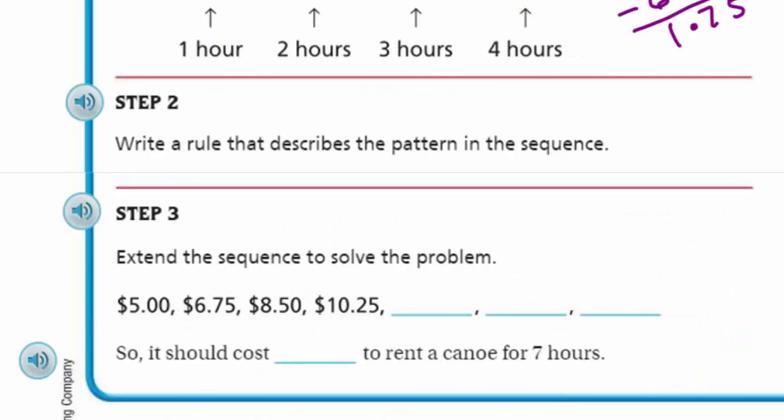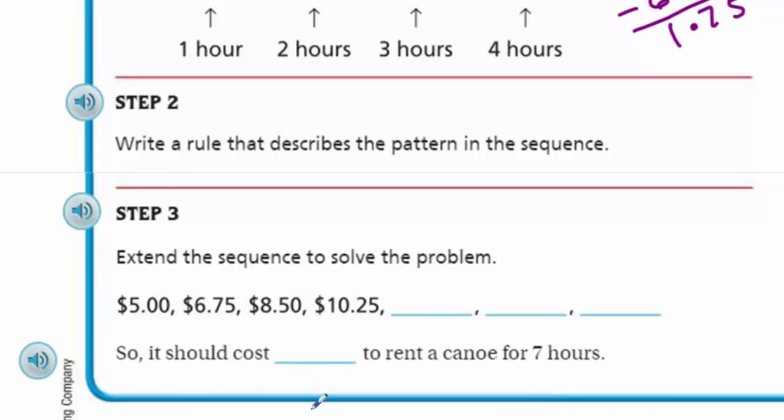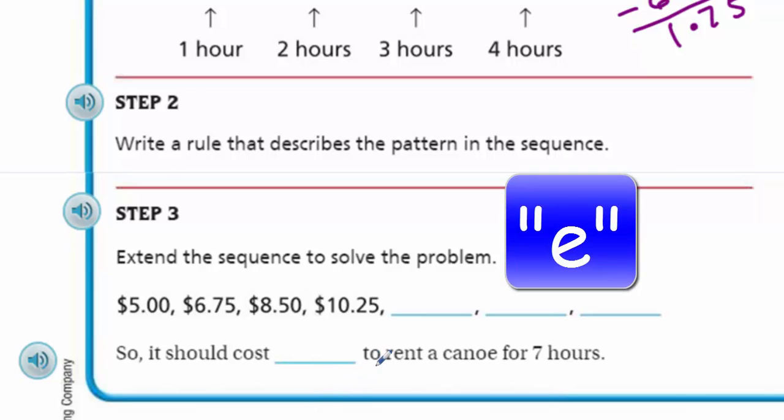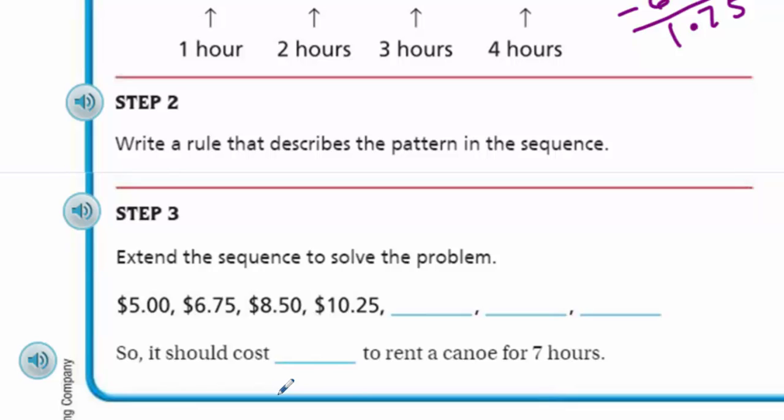That was step one. But there's more steps. Yes, we have step two. This is write a rule that describes the pattern in the sequence. They're using all these new terms here, so I want to make sure that we're clear. It says write a rule, and then it also says a pattern. We're talking about a sequence. We're talking about a term. It'd be very easy to get confused by all of these new vocabulary words. So something I want to really make sure is that you understand that from each one of those terms in that sequence, that was $1.75 adding. So we would just say add $1.75. That's the rule in that sequence.